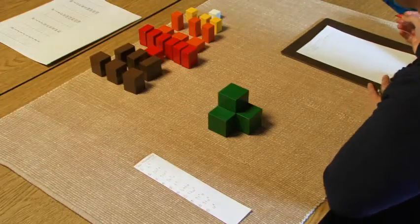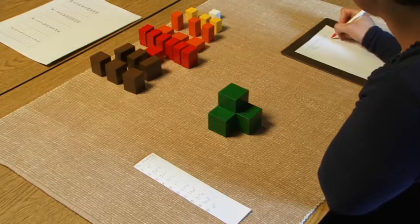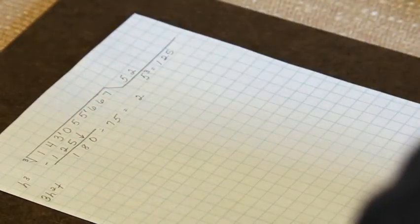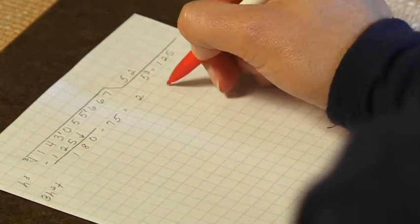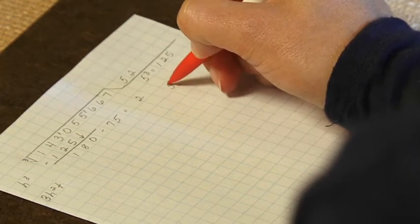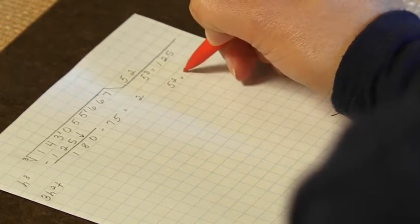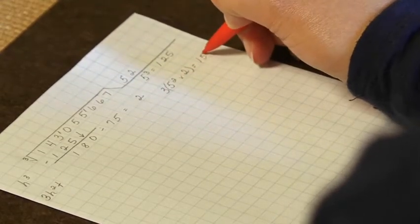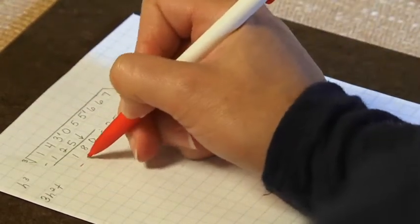And then we can fill in our 3h squared t. We'll take our hundreds, which is 5 squared, and we're multiplying that by the tens, which we know is 2. And we're taking that three times. So we have 25 times 2 is 50, times 3 is 150.